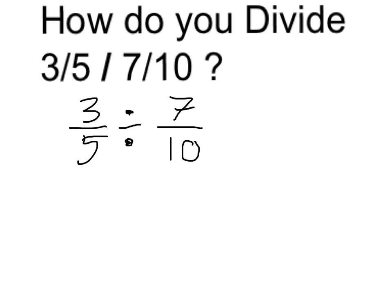Three-fifths is actually equal to six-tenths. Seven-tenths is a little bit bigger than six-tenths, so it's going to be a little less than one time that this goes into this.